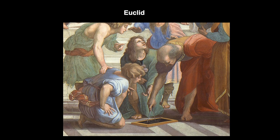Euclid is bent over, demonstrating something with the compass. His young students eagerly try to grasp the lessons he's teaching them. The Greek mathematician is known as the father of geometry, and his love of concrete theorems with exact answers demonstrates why he represents Aristotle's side of the School of Athens. Experts believe that Euclid is a portrait of Raphael's friend, Bramante.